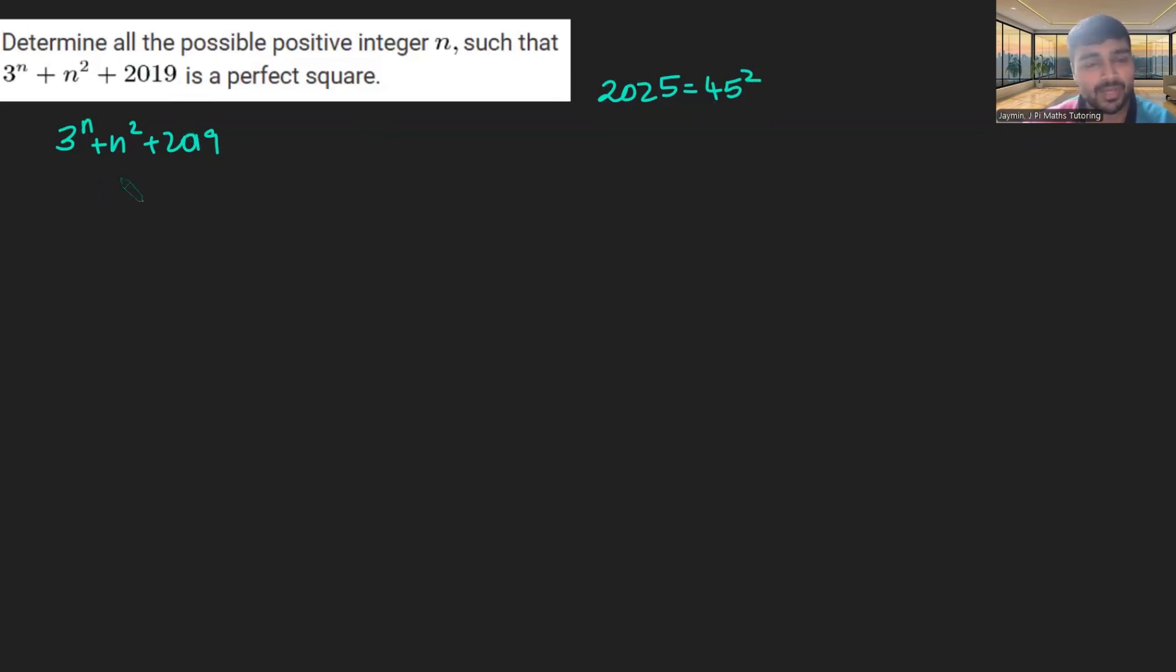Let's try n is 1. Well, when n is 1, you get 2023, and if you try n is 2, you're going to get 2032. So you're going to go from 2023 to 2032, so you're going to skip over 2025. So n is 1 and n is 2 don't work.